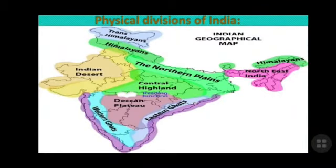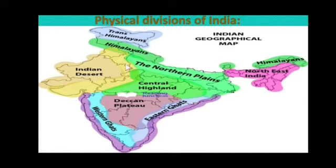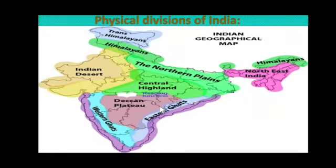Here is the map of the physical divisions of India. The Himalayas cover the northern portion. Coming down, we have the Northern Plains, then the Great Indian Desert, then the Deccan Plateau. The coastal areas on the east side are the Eastern Ghats, and the western part is the Western Ghats. We also have Lakshadweep and Andaman and Nicobar Islands as part of the 6 major divisions.